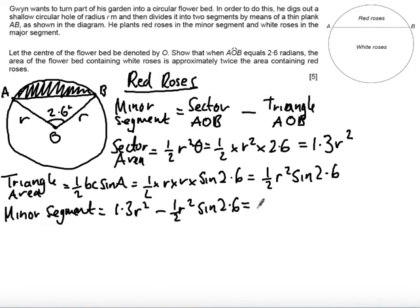And when I do that carefully, we get an answer of 1.0422 R squared to 4 decimal places. And 4 decimal places is probably plenty accurate enough at this point in time. So now I know the area of the red roses, what I want to do is find the area of the white roses.